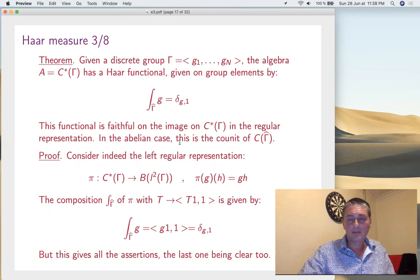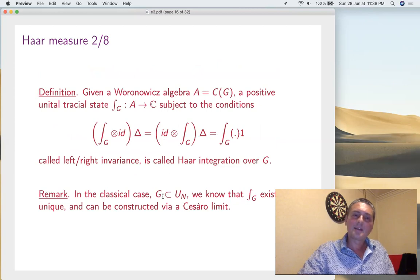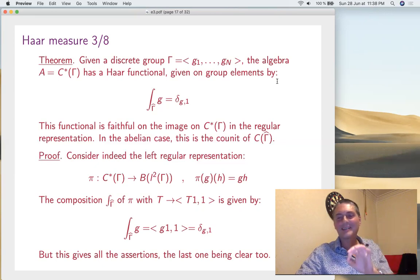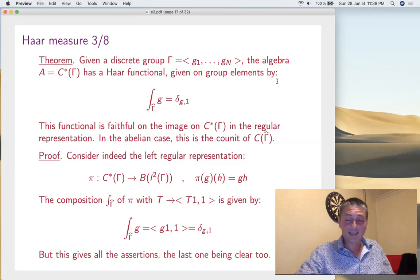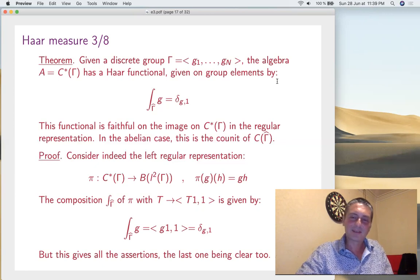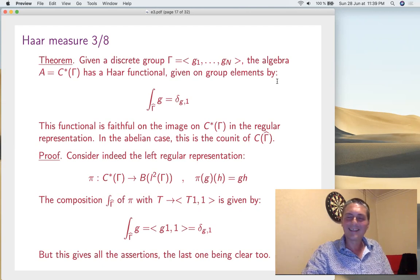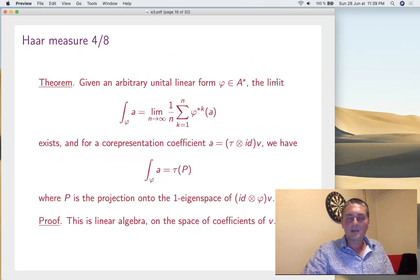Is this satisfactory? Almost. In the classical case we knew the integration exists, is unique, and can be constructed via Cesàro limits. What we have for discrete groups is that it exists, is unique, and is very simple. But for our purposes we definitely need the Cesàro construction, as an exercise — you could try to prove that the discrete Haar appears via Cesàro limits, but that needs some functional analysis. So we'll do everything in general in the compact quantum group setting, and in particular apply it to the discrete case.